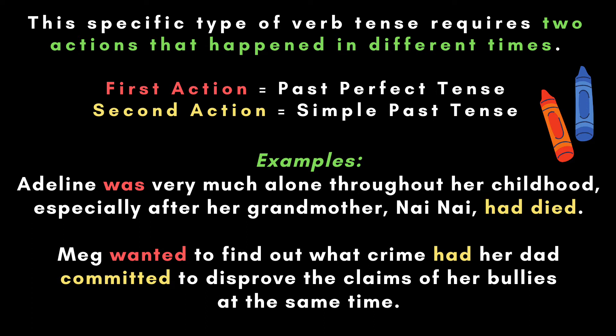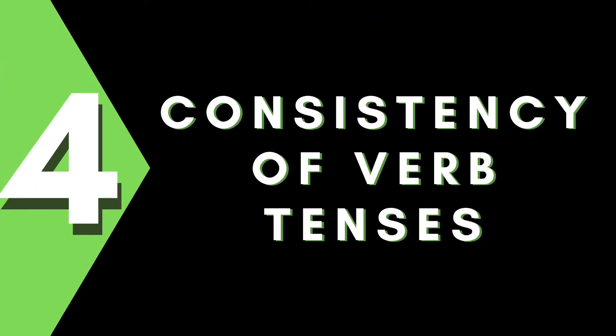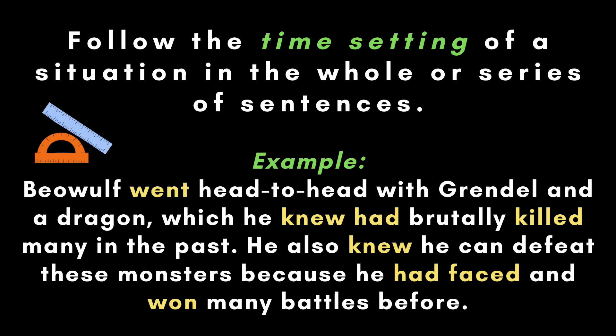Talking about verbs, the next common error committed by writers has something to do with consistency of verb tenses. Always follow the time setting of a situation in the whole or series of sentences. Example: "Beowulf went head-to-head with Grendel and a dragon, which he knew had brutally killed many in the past. He also knew he could defeat these monsters because he had faced and won many battles before."